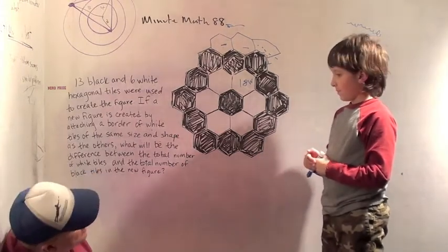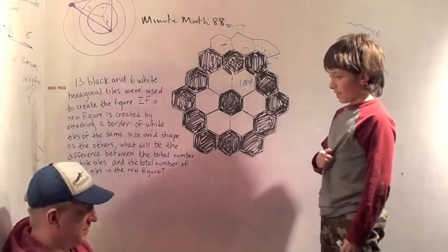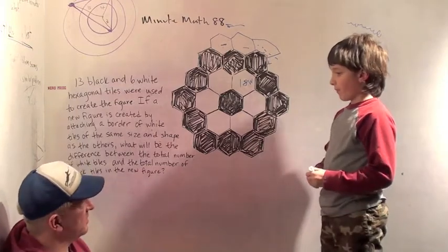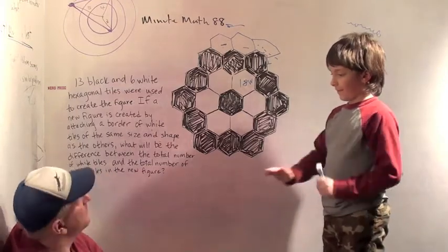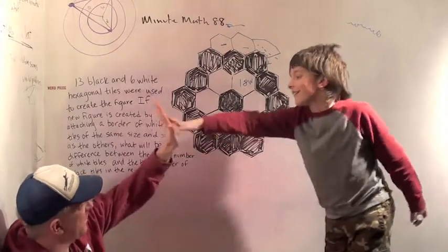So what's the difference between the white tiles and the black tiles? It's eleven. What equation do you have to solve? You have twenty-four minus thirteen. Twenty-four minus thirteen, which is? Eleven. Eleven. Good job.